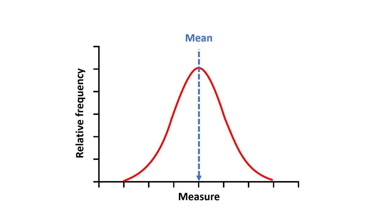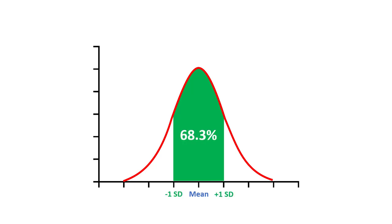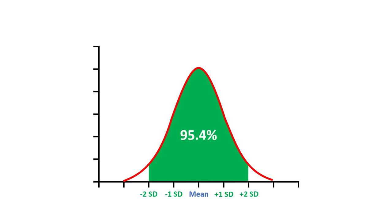The width of the curve relates to the standard deviation of the distribution. The standard deviation, abbreviated to SD, is a measure of the spread of data in the distribution. Within a normal distribution, approximately 68.3% of values will be within one standard deviation relative to the mean. Additionally, approximately 95.4% of values will be within two standard deviations, and nearly all of the values — around 99.7% — will be within three standard deviations relative to the mean.